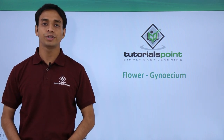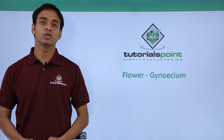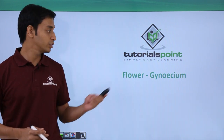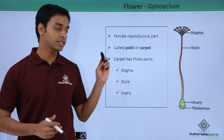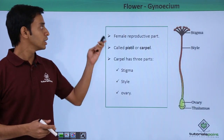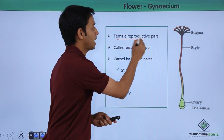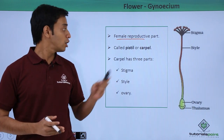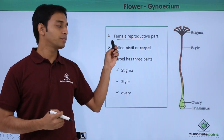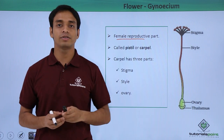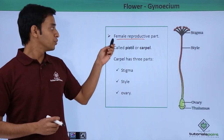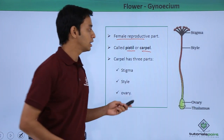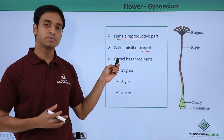Welcome to Tutorials Point. In this video we are going to talk about the second essential part of a typical flower, which is the gynoecium — the female reproductive part. As we discussed earlier, the androecium is the male reproductive part of a typical flower, whereas the gynoecium is the female reproductive part, also known as the pistil or the carpel.